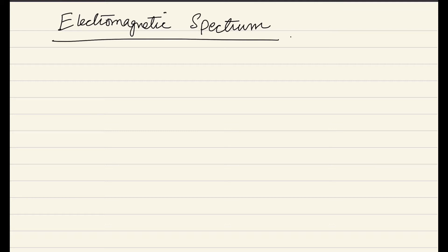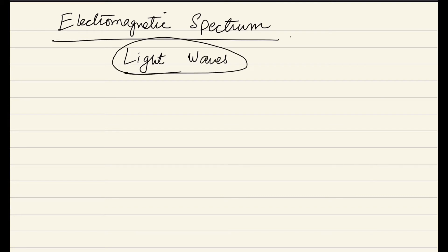As we know that we are specifically talking about light waves. So there are different types of light waves. All types of light waves that are arranged in a set — that set is basically called the electromagnetic spectrum.